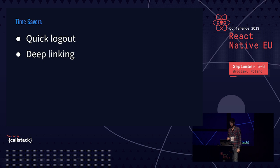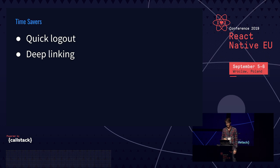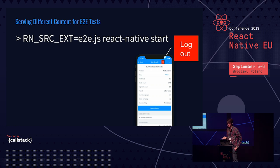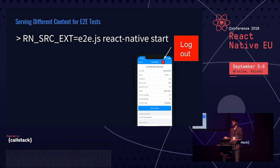Another time saver is deep linking — instead of tapping through to the fifth screen, you just deep link there. To serve different content for end-to-end tests, you pass an environment variable to the packager. I passed e2e.js, which means the packager will prefer files with the e2e.js extension before normal JS files.